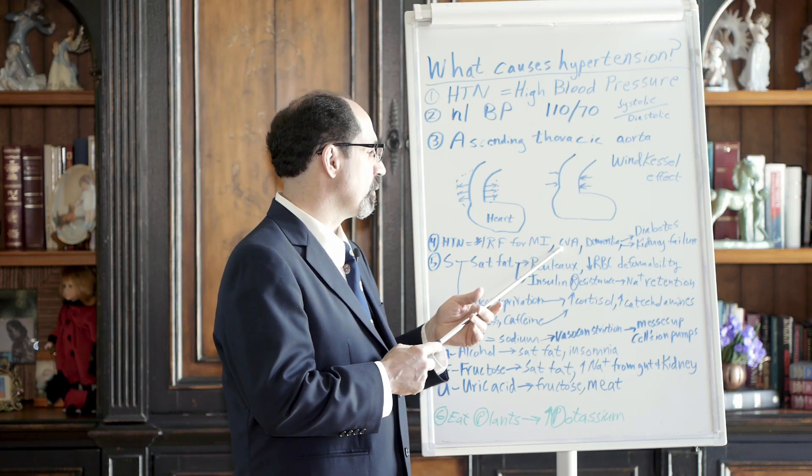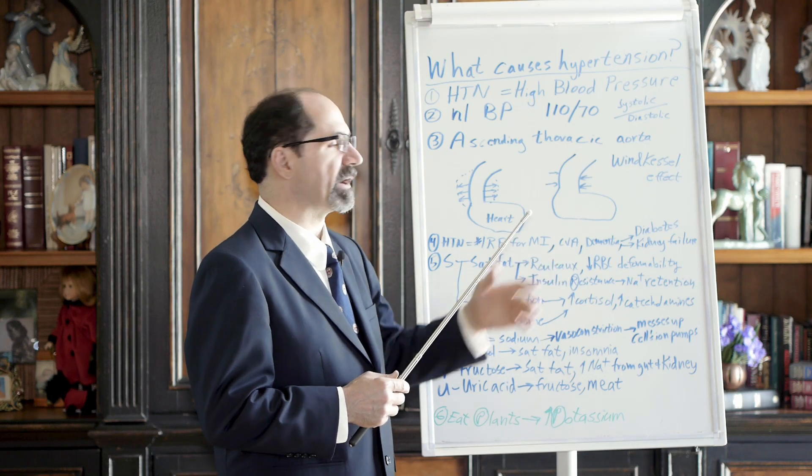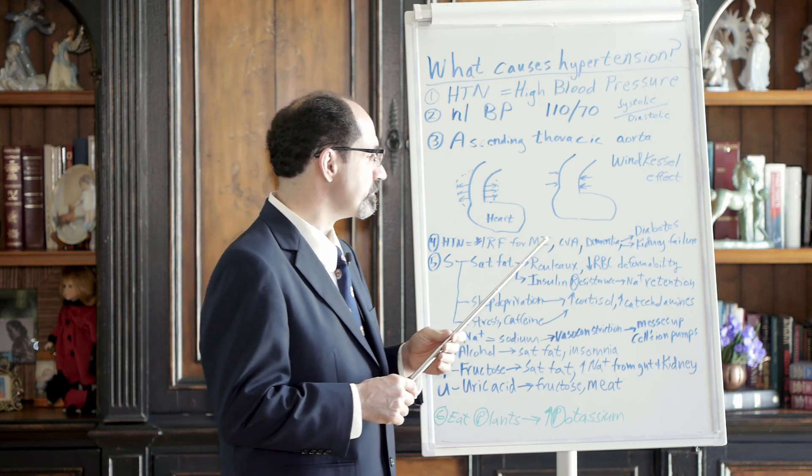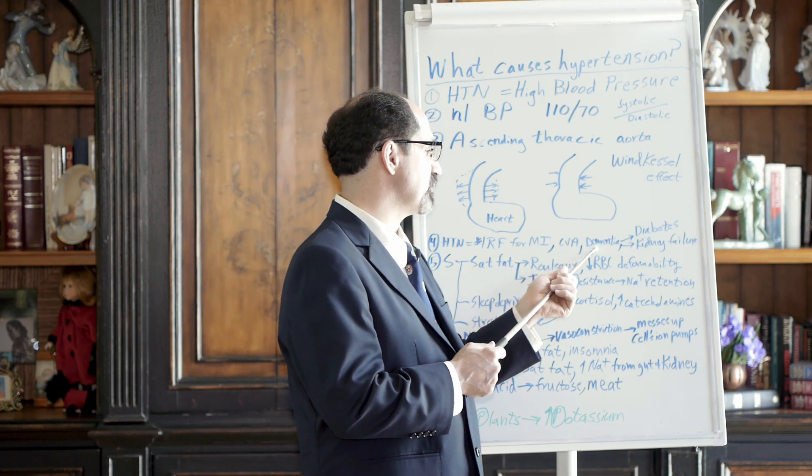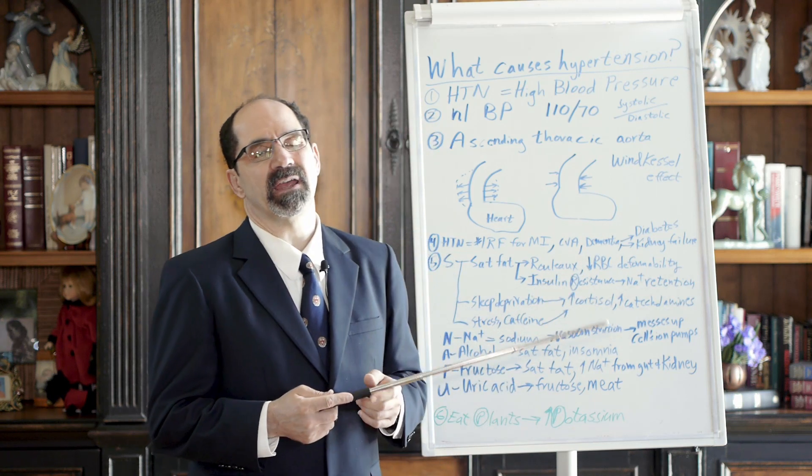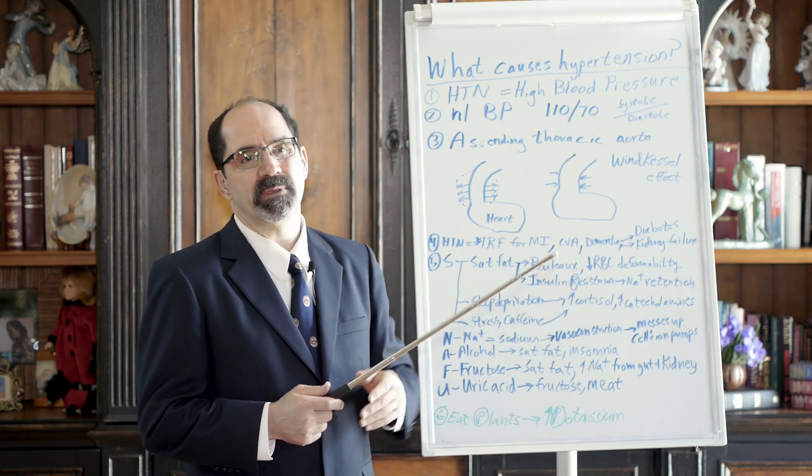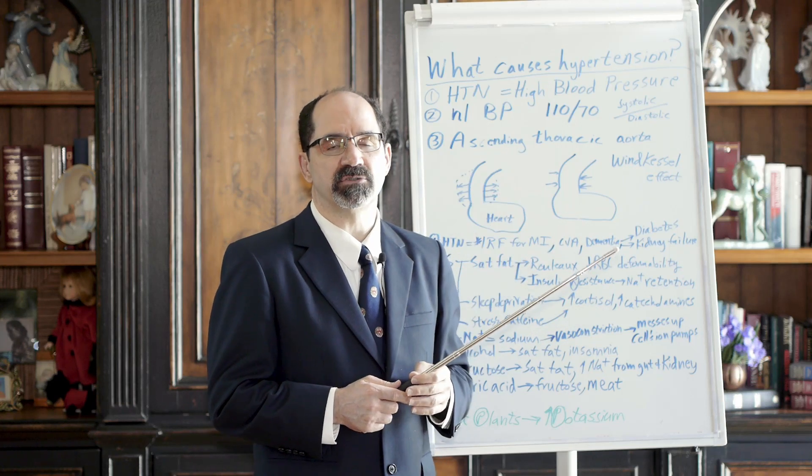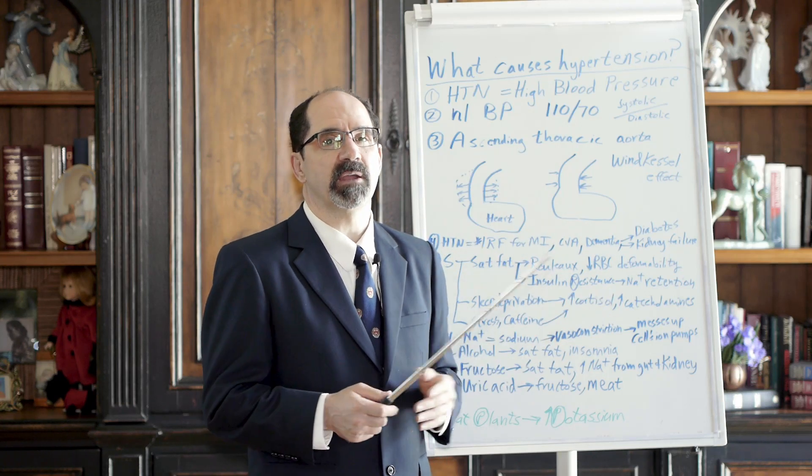It's the number one risk factor for having a cerebrovascular accident, which is a fancy way of saying having a stroke. It's also the number one predisposing thing to causing dementia. I look at brains every day, and I can tell you all these old people, people after 50 years of age, they've got all these little patches of dead brain tissue, and it's typically attributed just to hypertension.